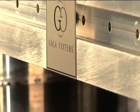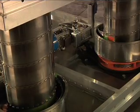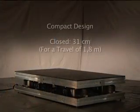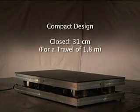The ILS 250 is the most compact of the SpiralLift units of equal size. It is only 31cm high when closed for a travel distance of 1.80m.